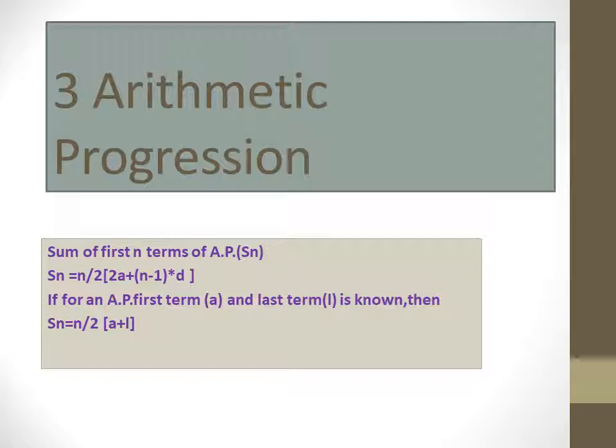When A, D, and N are given, we use this first formula. Now if in a given AP the first term A and the last term L are known, then we use the second formula: S_N equals N upon 2 into bracket A plus L. In most cases we use the first formula only. But if the last term is given and the number of terms is known, then we can use this second formula.